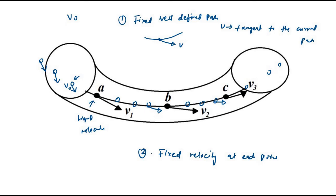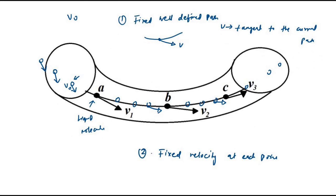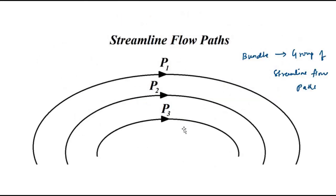If we combine or group a number of steady or streamline flow paths, that is called a bundle — a group of streamline flow paths. The fluid molecules take fixed well-defined paths with fixed velocity at each point; it is simply a grouping of multiple streamline flow paths that forms this bundle.